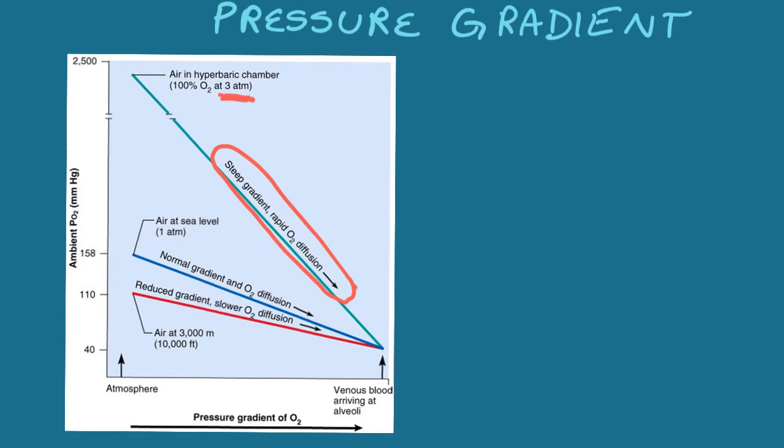The opposite is the reduced gradient. So imagine that you are at a very high altitude in Quito, Ecuador, or in Colorado, on a very high ski slope. The air at 3,000 meters is a very low pressure. So this causes the oxygen to diffuse much more slowly, which is why people get mountain sickness when they are at a very high altitude.